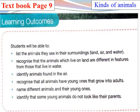This is your textbook page number 9 — Learning Outcomes. Students will be able to list the animals they see in their surroundings — on land, in air, and in water. You can list the names of those animals that you can see in your surroundings, just like dogs, cats, etc.